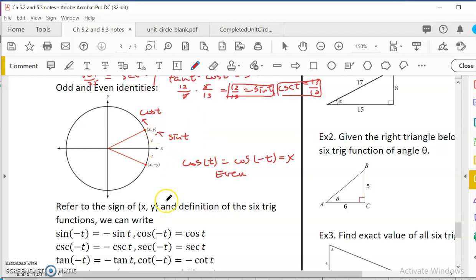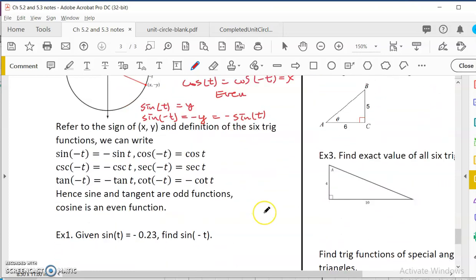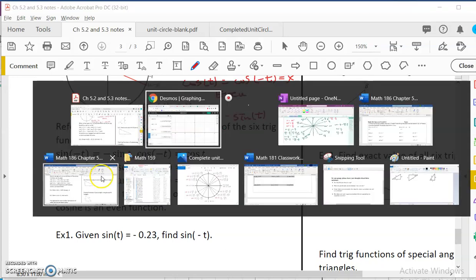What about sine? You can see that sine t is y. But sine of negative t is equal to negative y, right? Because the y is negative. But negative y can be written as negative of sine t. So this is the definition of an odd function: f of negative x equal to negative f of x. So sine is odd. Sine, if you input negative, it's the same as you do negative outside.